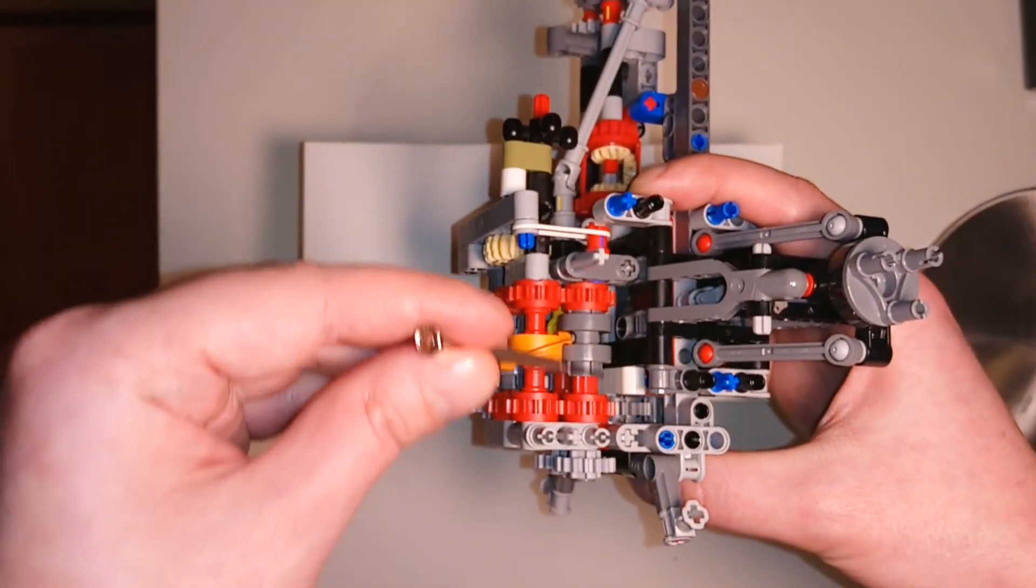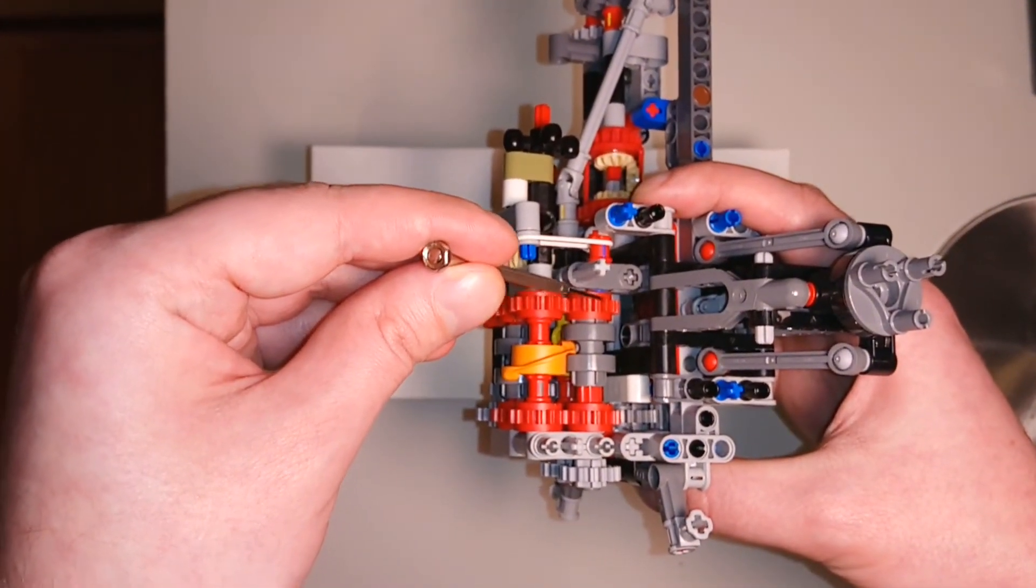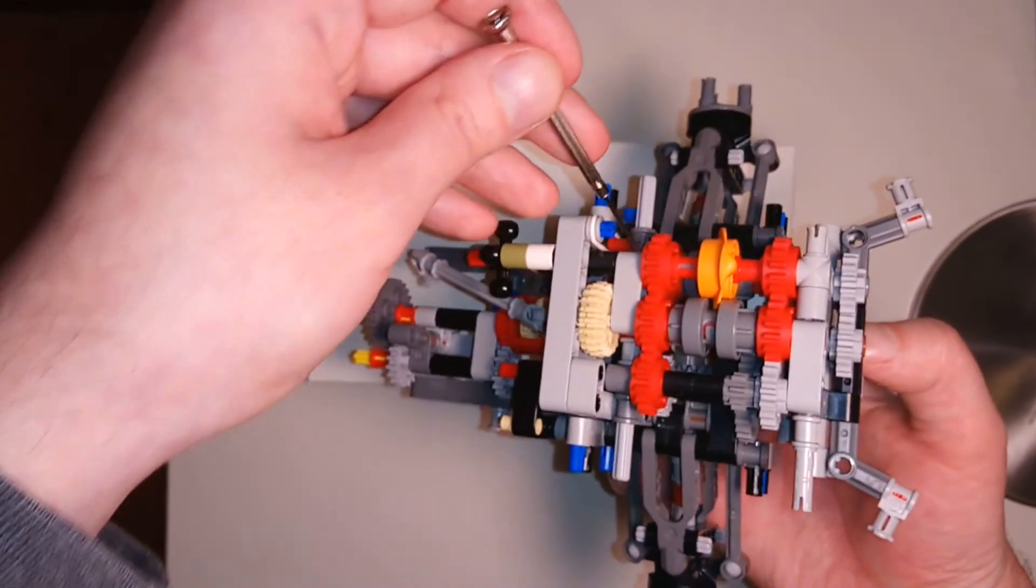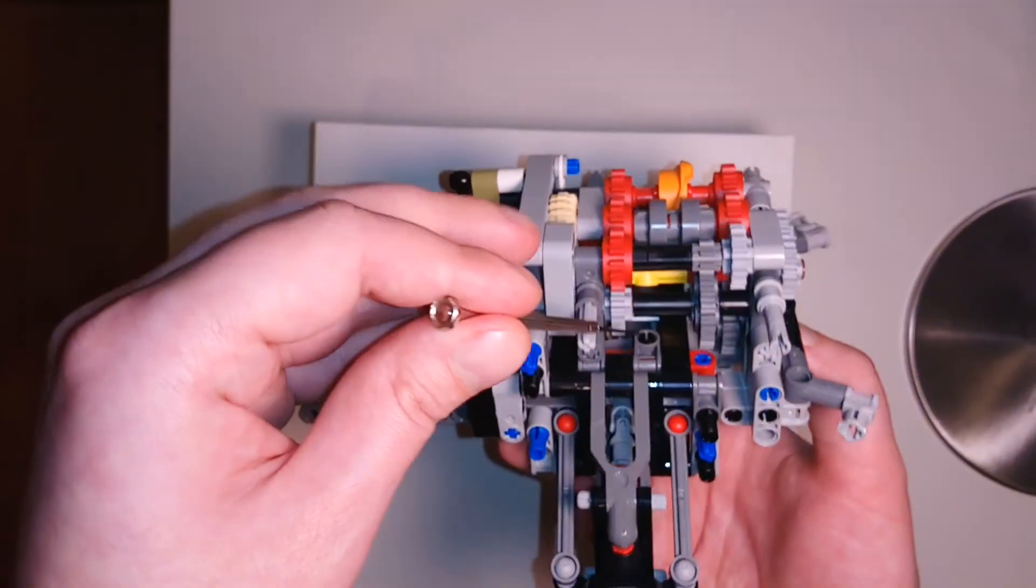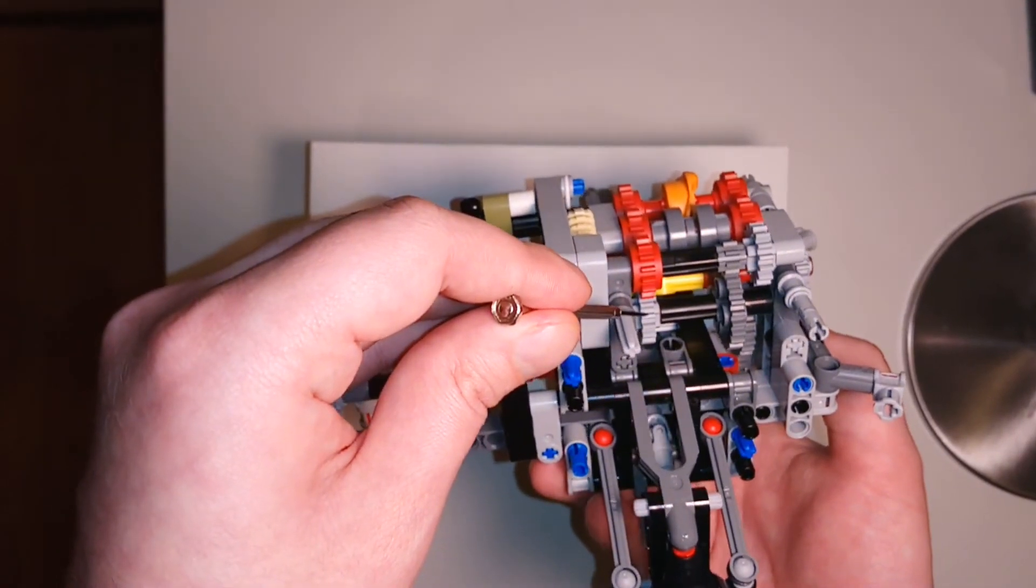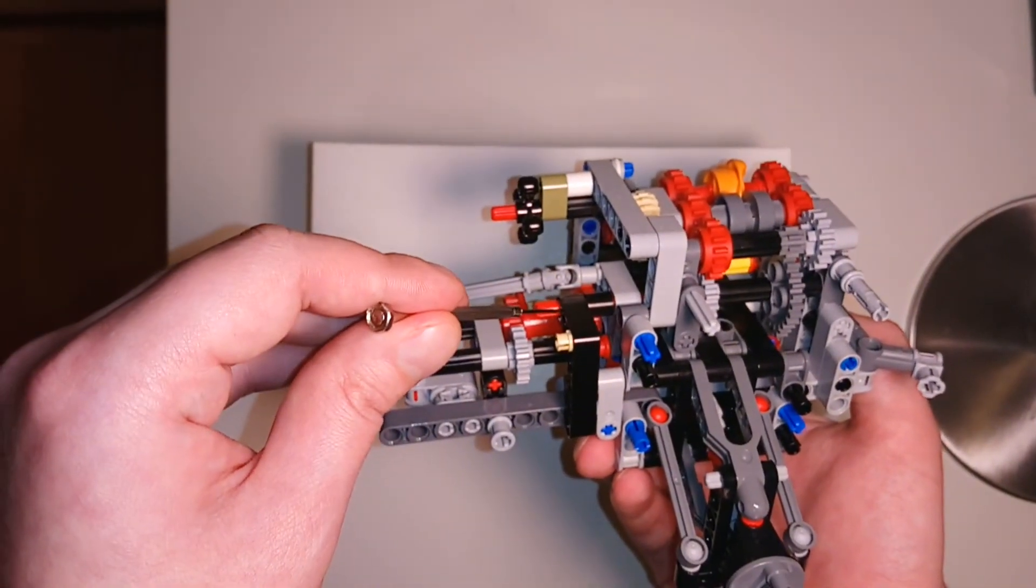Then it crosses over to this selected red gear on the other side, follows the path of red gears to the gray gear, and finally exits from the output shaft.